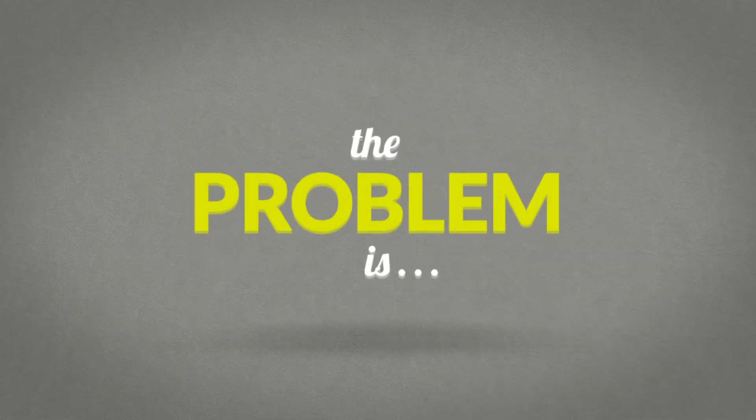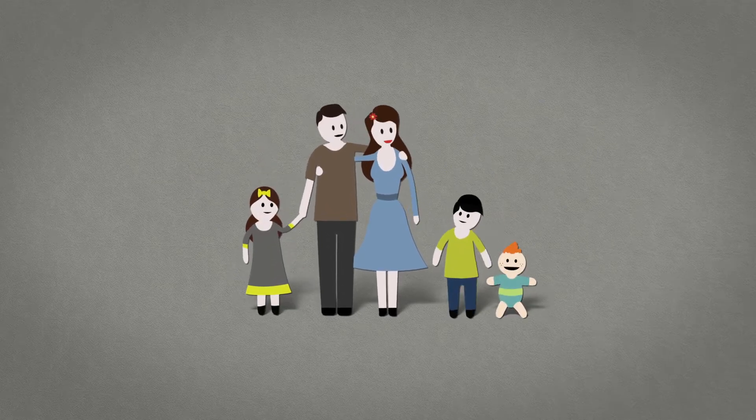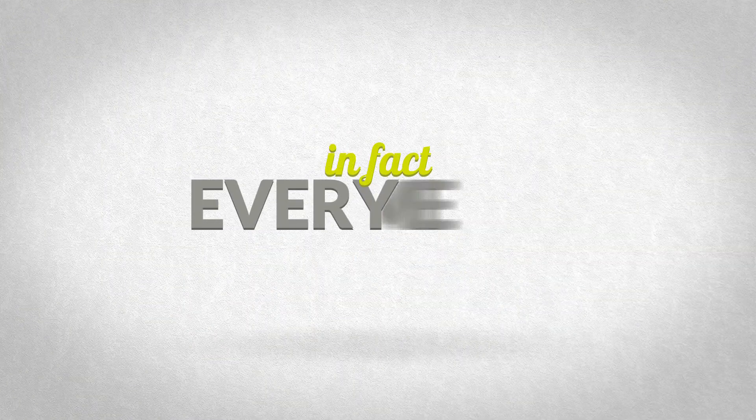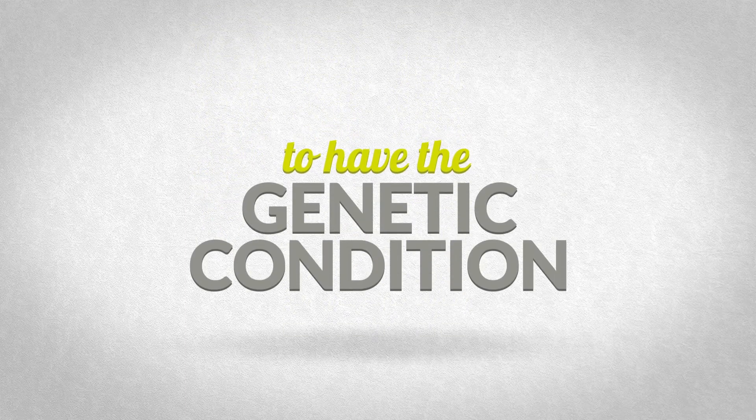The problem is that two genetic carriers for the same recessive disease could begin a family completely unaware of their risk. In fact, every time they become pregnant, there is a 25% chance for the baby to have the genetic condition.